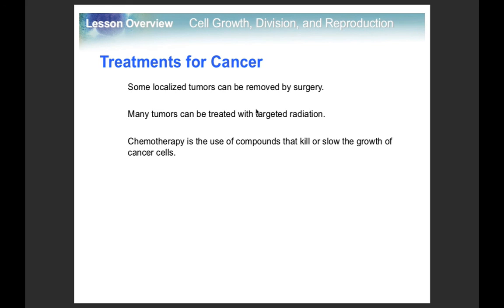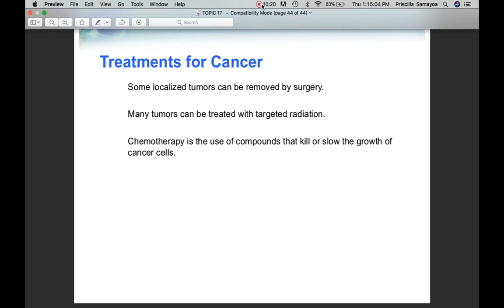For cancer treatments, there are a lot more alternatives now, but the basic ones are targeted radiation — they find the tumor or cancer cells and radiate just that area. If not, you have chemotherapy. In many cases you can just remove the tissue, which is why many people with breast cancer get their breasts removed.